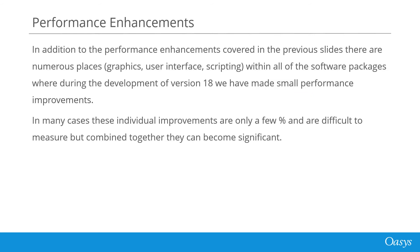In addition to the enhancements I have covered, there are lots of places in all of the software packages where we have improved performance in version 18 compared to version 17. Some of these improvements are quite small, in some cases only a few percent, and they're difficult to measure, but combined together these improvements can become significant to the user. As we develop future releases and updates we will continue this process of identifying and eliminating other bottlenecks and improving the performance of existing features. As we find our customer model sizes continue to grow, we will reassess our goals to ensure that they stay ahead of our customers' requirements.